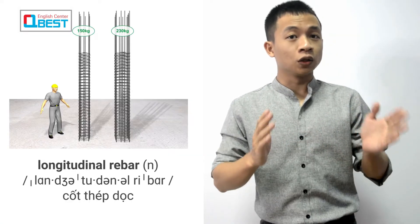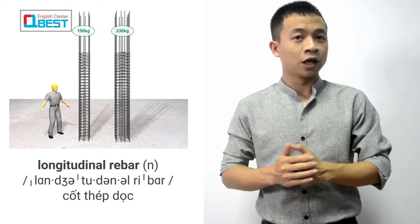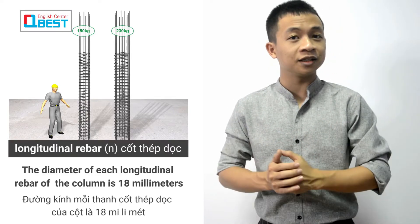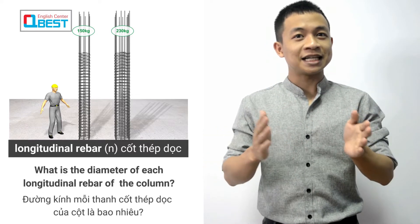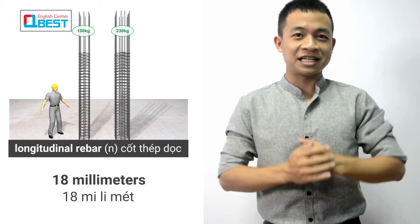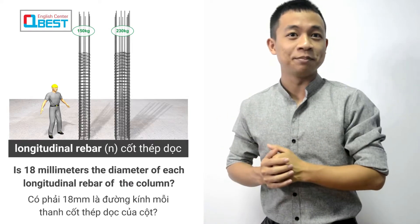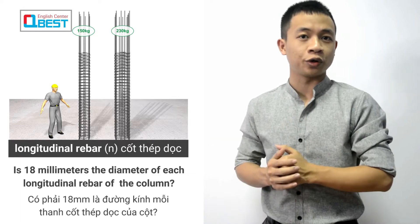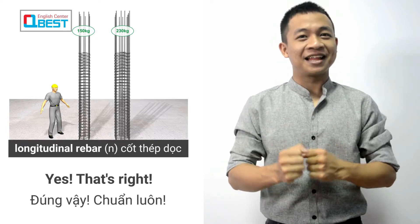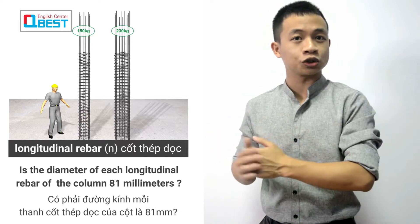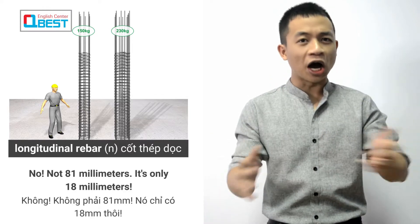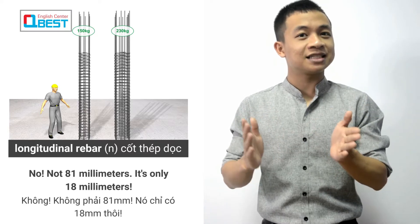Longitudinal rebar. The diameter of each longitudinal rebar of the column is 18 millimeters. What is the diameter of each longitudinal rebar of the column? 18 millimeters. Is 18 millimeters the diameter of each longitudinal rebar of the column? Wow, that's long. But yes, that's right. Is the diameter of each longitudinal rebar of the column 81 millimeters? No, not 81 millimeters — it's only 18 millimeters.